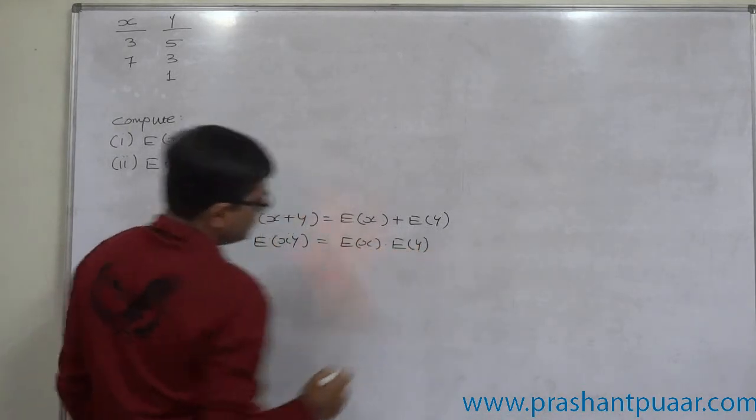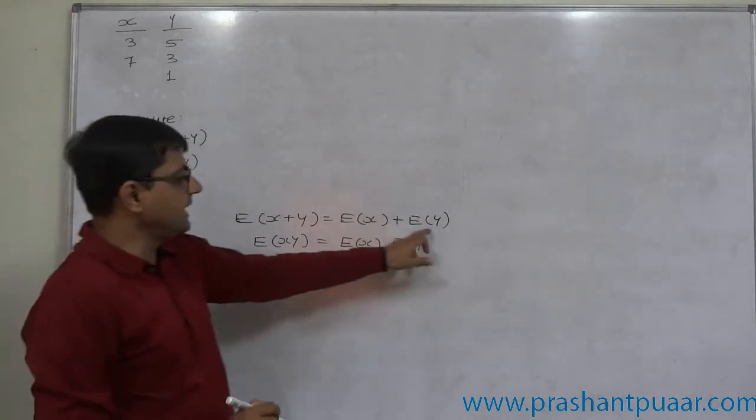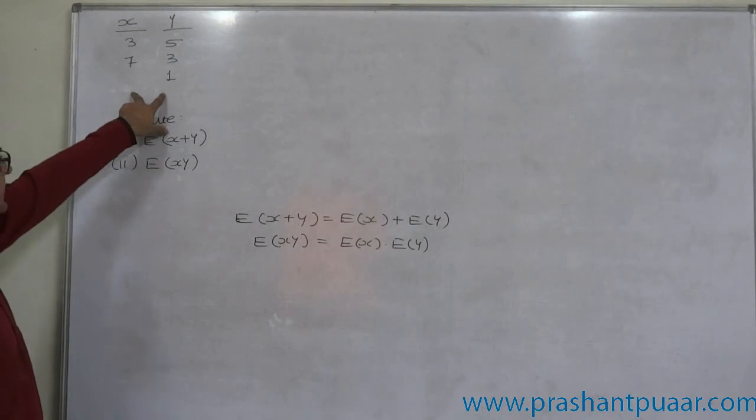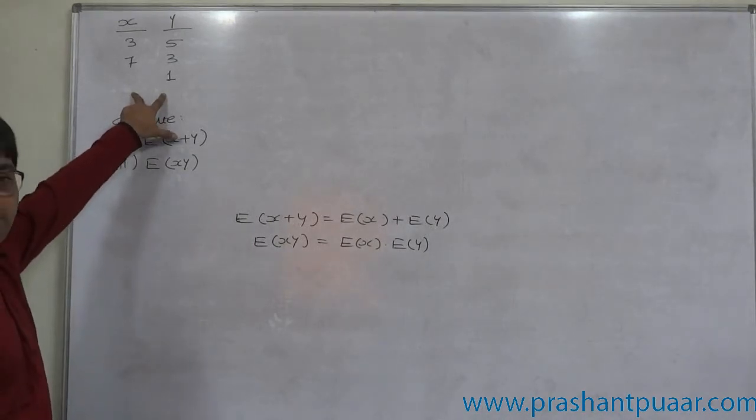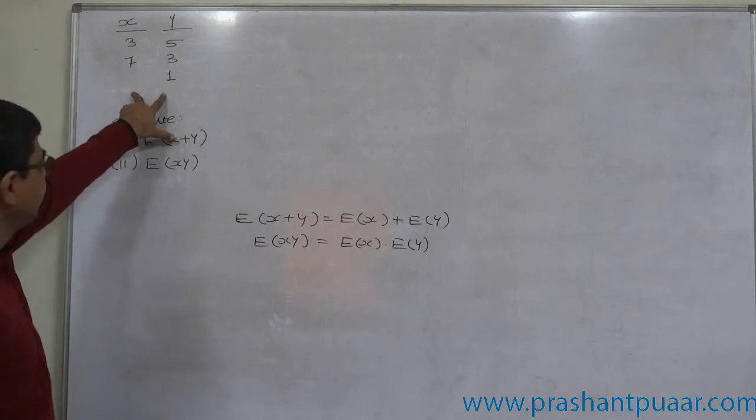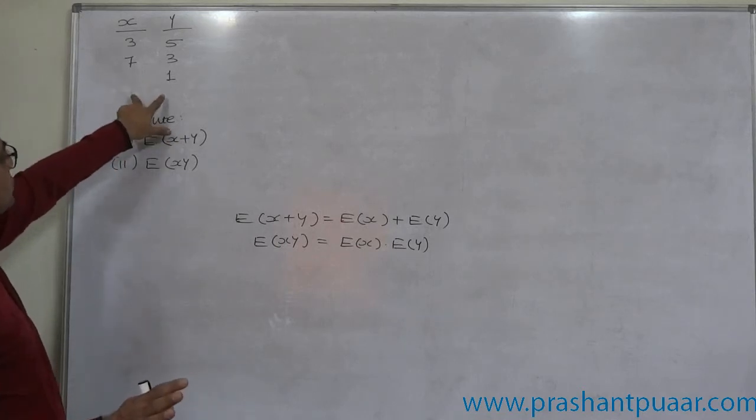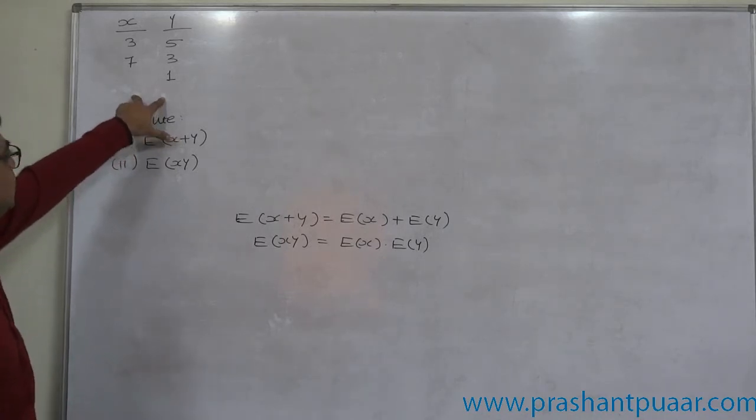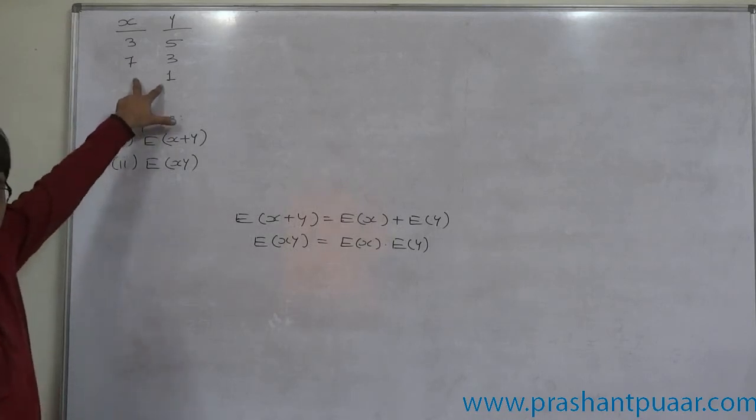In this case, we just require to calculate E of x and E of y. But how can we calculate E of x and E of y without the information of probability? Actually, the information of probability is missing. When the probability or frequency is not expressed directly, that means this is the case of equally likely outcomes.